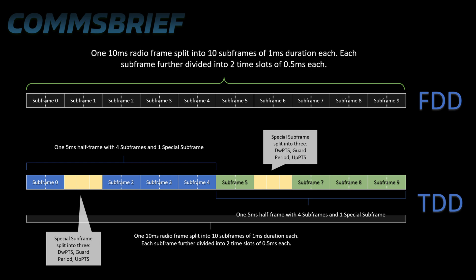In this picture, at the top we have FDD and at the bottom we have TDD. In 4G LTE, both in FDD and TDD, the transmissions are sent in radio frames of 10 milliseconds.